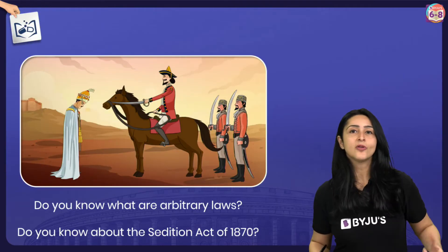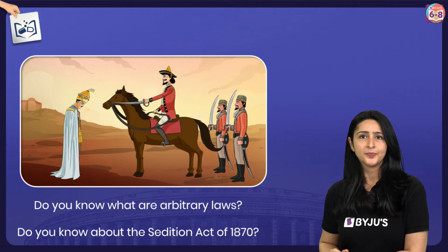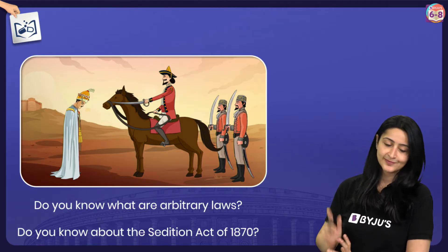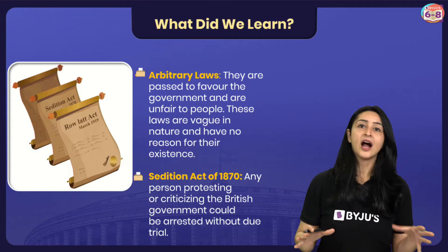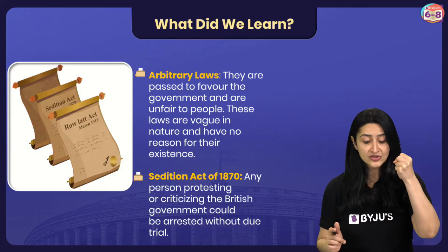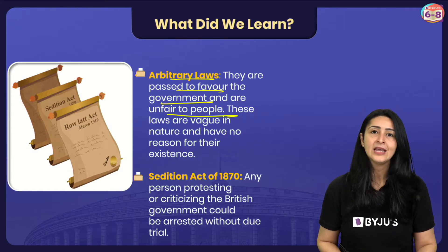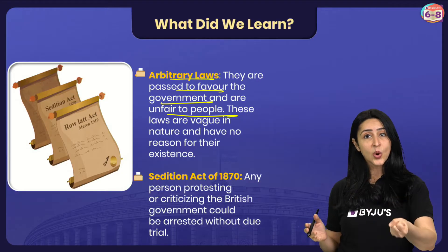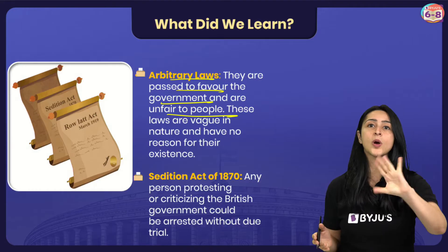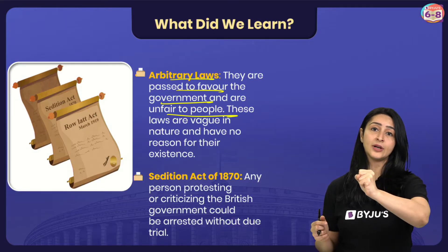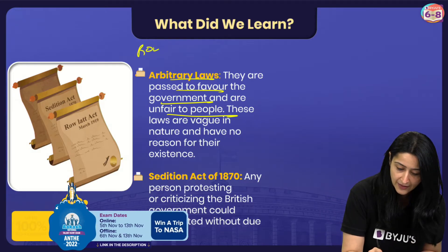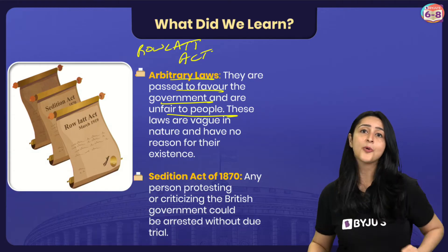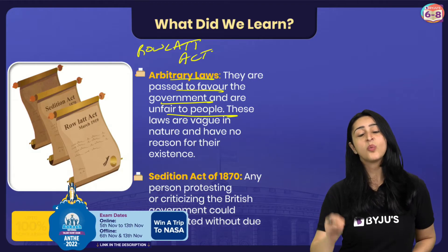To understand the rule of law better — do you know what an arbitrary law is? Arbitrary laws are passed to favour the government and are generally unfair to people. These laws are very vague in nature and have no real reason for their existence. They allow the government to arrest people if they go against it. An example of British arbitrariness was the Rowlett Act, which basically allowed the British government to imprison people without due trial.